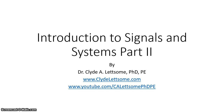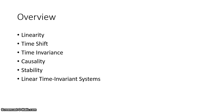This is an introduction to signals and systems, part 2. In this lecture, we'll take a look at the different properties related to signals and systems. In particular, we'll be looking at linearity, time shift, time invariance, causality, stability, and then we'll talk about linear time invariant systems.